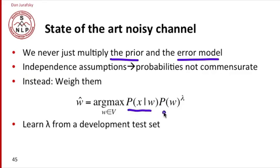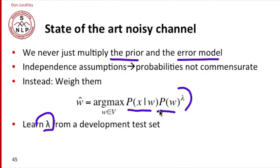So what we do in fact is, instead of just multiplying these two, we weight them. Since we're multiplying probabilities, we weight them by raising one of them to a power lambda. We learn this lambda from some development tests — we pick whatever lambda to raise the language model probability to, such that the product is more likely to pick out just those errors that really are errors. We use this weighting of the noisy channel model in almost any application.